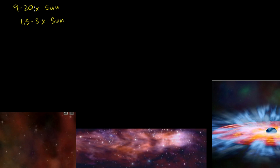this 9 to 20 times is the mass of that star when it's in its main sequence. This 1.5 to 3 times is the mass once it's shed off a lot of the outer material of the star, and this is really the mass of the remnant of the star, kind of the core of the star.